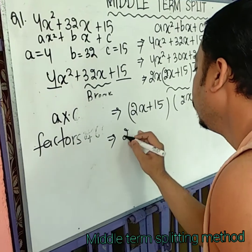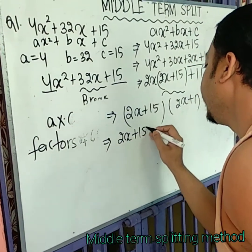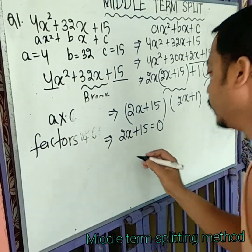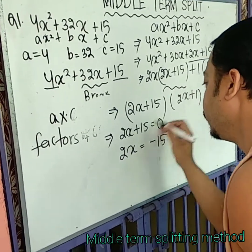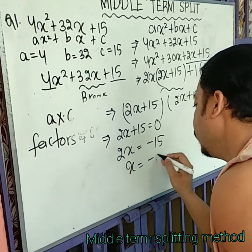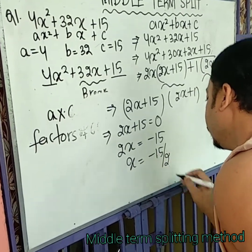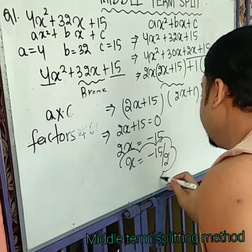So, 2x plus 15 equal to 0, 2x equal to minus 15, x equal to minus 15 upon 2. So, I have a zero here.